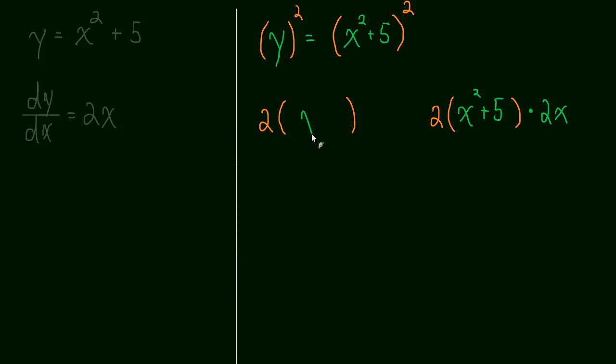Repeat the inside. Well, that's just y. So actually, let me make these parentheses a little bit smaller. Times by the derivative of the inside. Well, the derivative of y is just dy/dx, the derivative of y with respect to x. So these two things should be equal. We just did the chain rule to both sides. We took the derivative of each side.